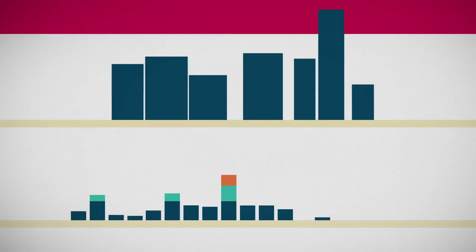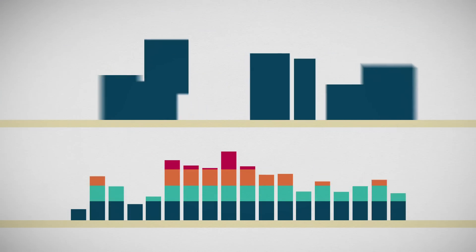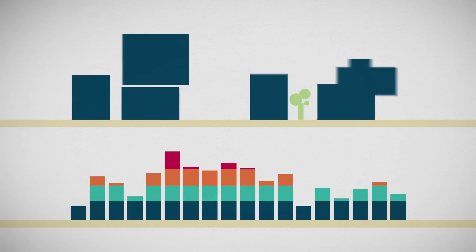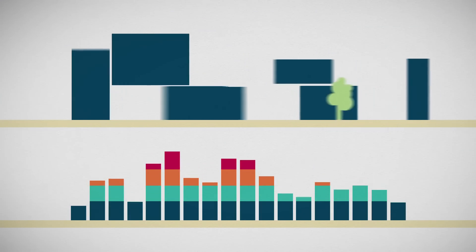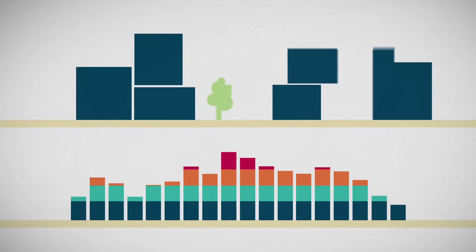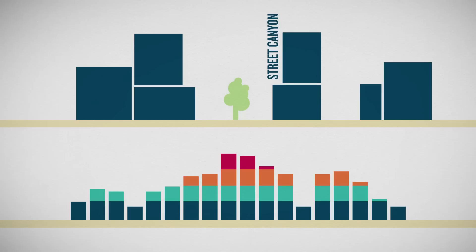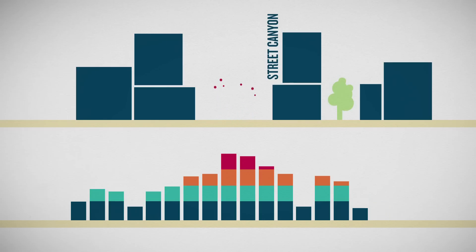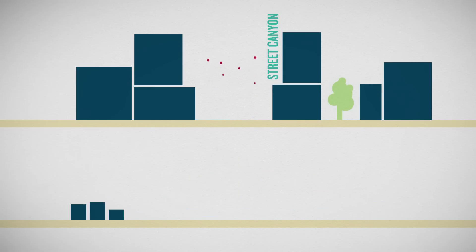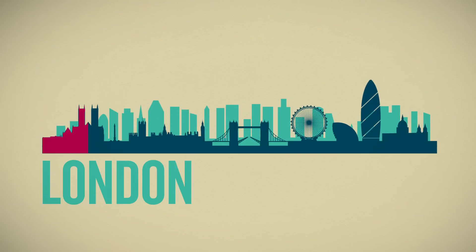Zooming in further, we can move street elements around and see which arrangement results in the best air quality. This might not always be the obvious choice. Trees, for example, can hinder the flow of traffic-related air pollution out of busy street canyons. Basically, it all depends on the specific situation.